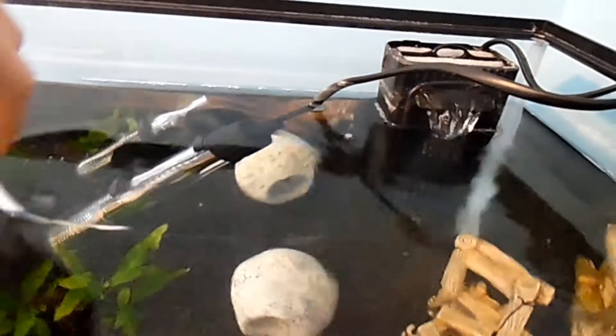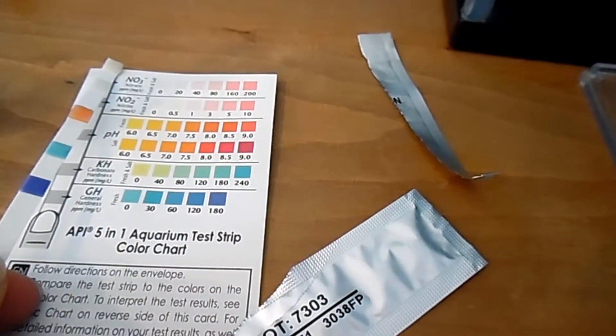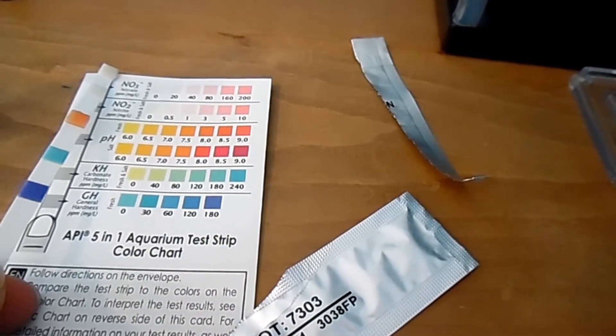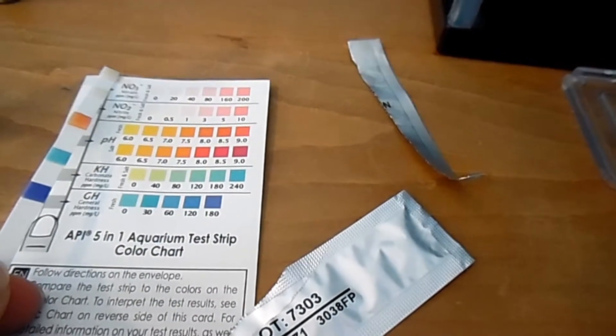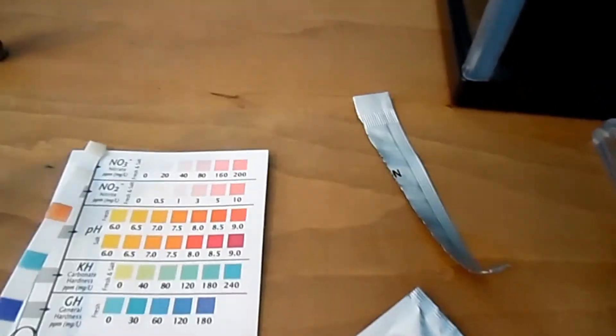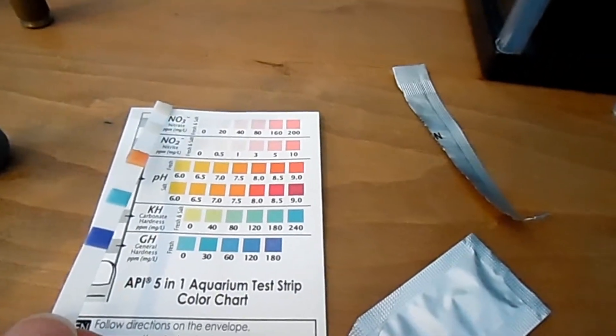So you have to dip them in and swirl them around twice, and you measure the first two parts, and then you wait 30 seconds to read the other ones.